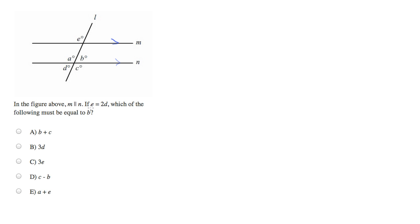But then they throw a little wrench in the works. They say e is equal to 2d, which is a strange thing to say. Usually they give you an angle measure and then they ask you which of the following must be equal to b. So you have some given information and you're asked to find something. So this is kind of a hybrid question.